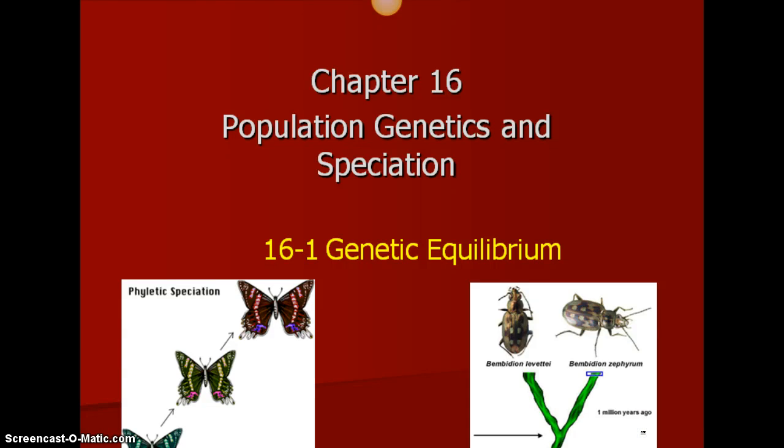Hello, class. Today we're going to be starting Chapter 16, which is on population genetics and speciation. We're going to go a little further in our evolution study and look at a whole population of a species and see how variations can happen over time.